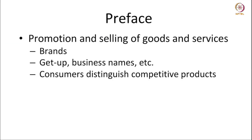Trademarks came up as a means to promote and sell goods and services — earlier it was just goods, but later services were added because when trademarks evolved initially the focus was only on goods. Traders usually used brands as a means to identify their goods, not only identifying the goods and services they were selling but also to identify the business names. A trademark can be something that identifies a business name, the entity that does the business — a corporation or organization — and it could also mean the product sold or the services offered.